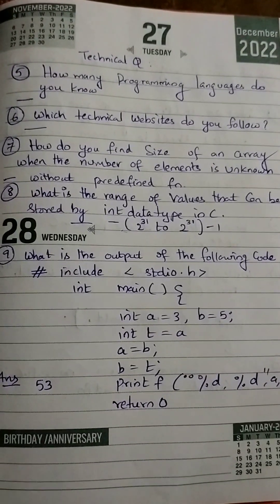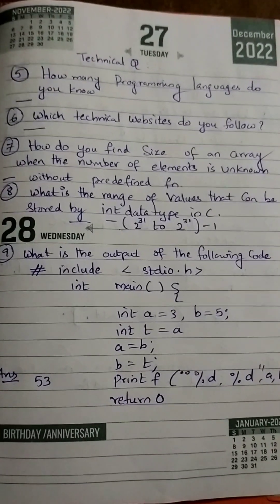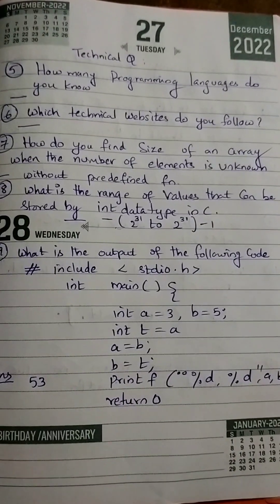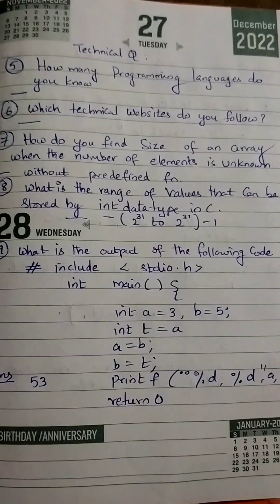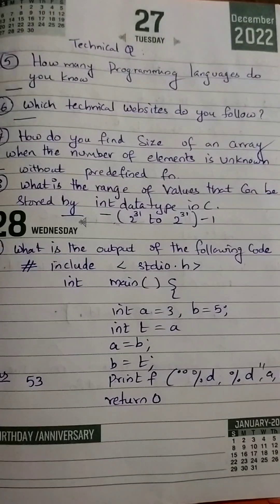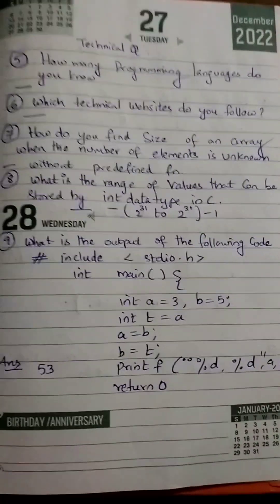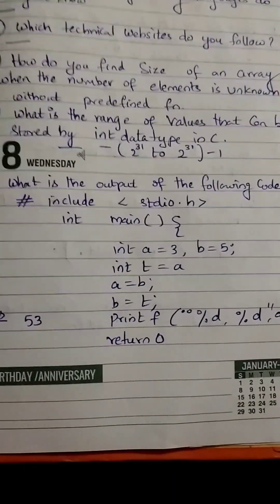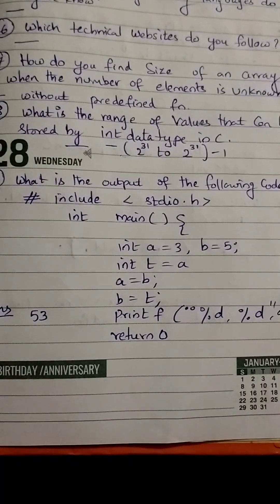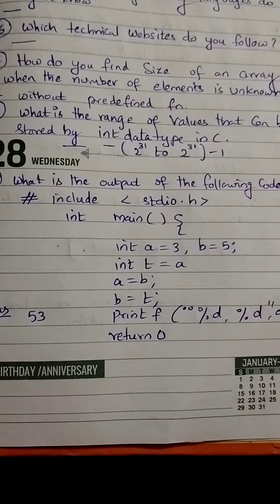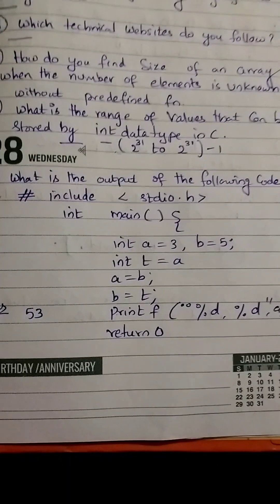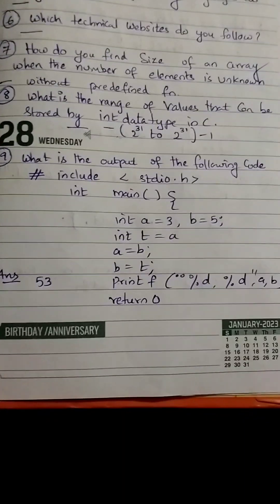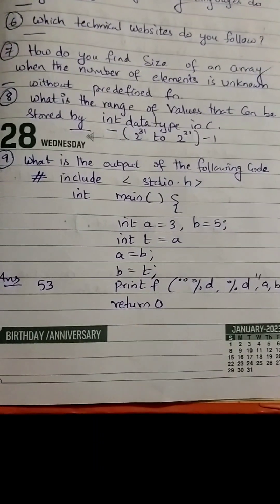'What is the range of values that can be stored by the integer data type in C?' The answer is minus 2 to the power 31 to 2 to the power 31 minus 1. 'What is the output of the following code?' — integer a equals 3, b equals 5, then a equals b, b equals a, print f, return 0. The answer is 5 3.